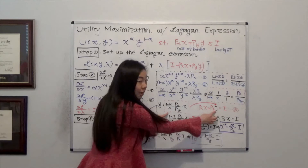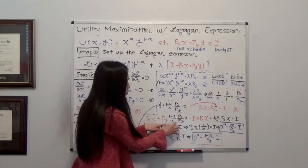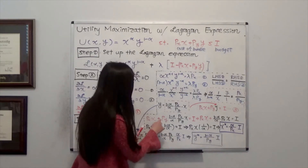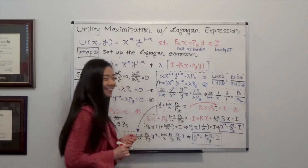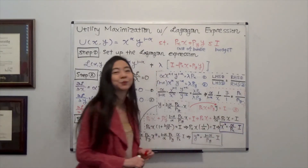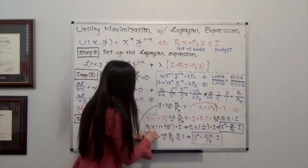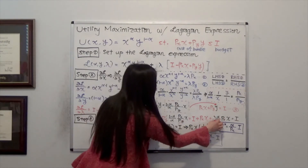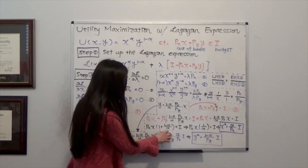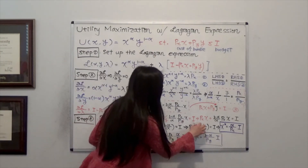The final step uses the budget constraint: p_x·x plus p_y·y equals i. I know y equals 1 minus alpha over alpha times p_x over p_y times x, so I plug that in. The p_y terms cancel, leaving p_x·x plus 1 minus alpha over alpha times p_x·x equals i. Pulling out p_x·x gives p_x·x times 1 plus 1 minus alpha over alpha, which simplifies to p_x·x times 1 over alpha equals i.